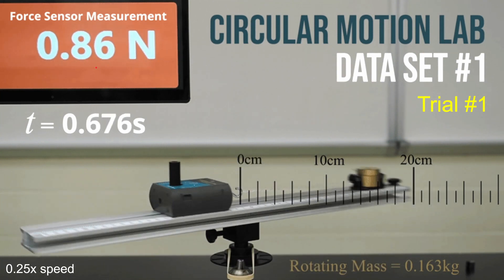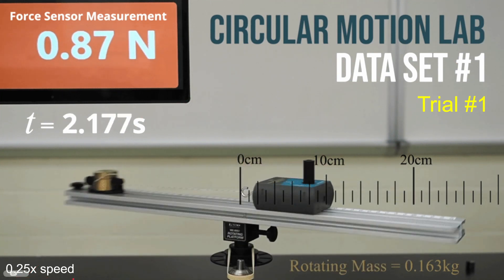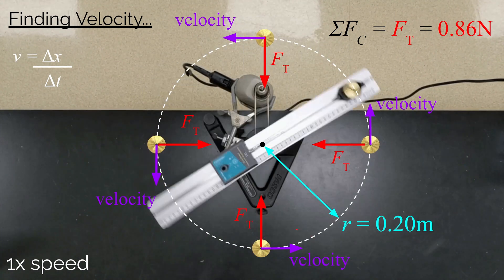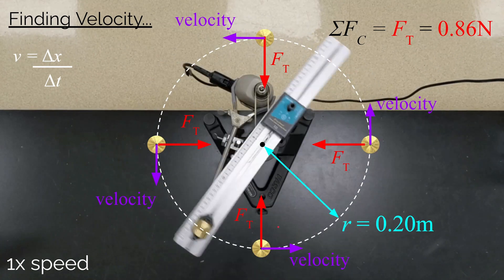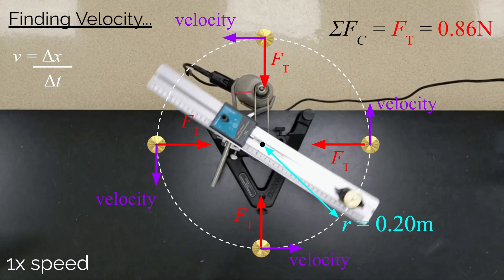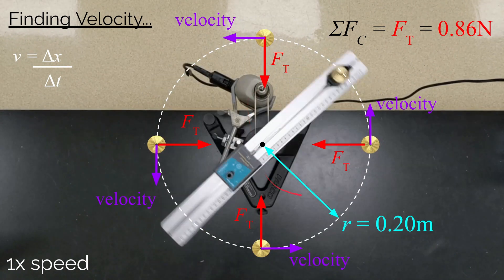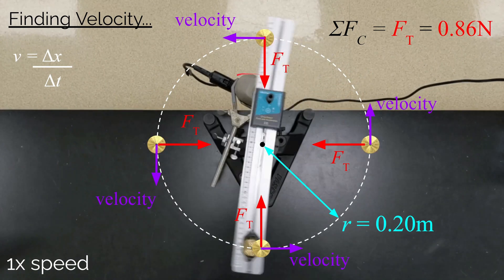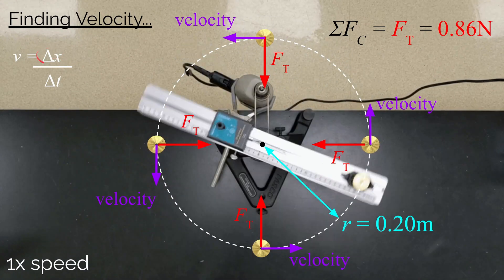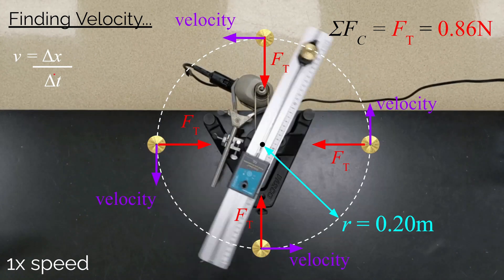The question is: how fast is that mass traveling? This video is shot at about a quarter normal speed, but the mass is actually moving fairly fast. A drill is hooked up to the rotating platform to ensure the mass moves at constant speed. For anything moving at constant speed, we can take the displacement divided by the time to find that speed.